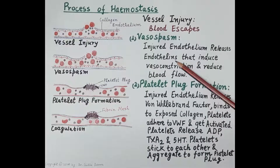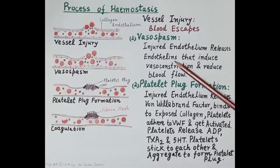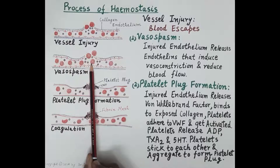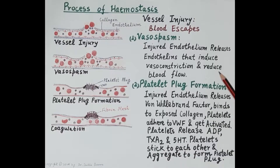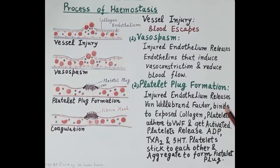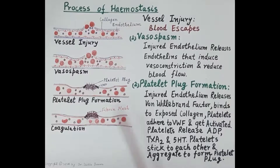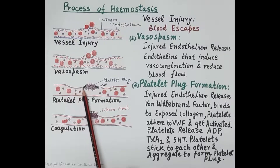This narrowing is termed vasoconstriction. The injured endothelial cells release many chemicals; one of the most important is endothelins. These injured endothelial cells release endothelins, which induce contraction of the smooth muscle cells present in the tunica media. This contraction is responsible for vasoconstriction, resulting in narrowing of the lumen, reduced blood circulation in the area, and therefore reduced loss of blood.